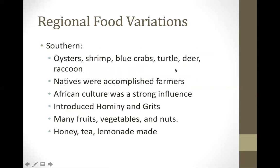In the southern region, they enjoyed seafood such as oyster, shrimp, blue crab, and turtle, as well as deer. The tribes that inhabited this area were Cherokee, Creek, and Seminole. They farmed beans, corn, and squash, and shared some recipes and food with African culture, because African slaves often lived at the corners of plantations where Native Americans could come to interact with them and share mutual recipes.